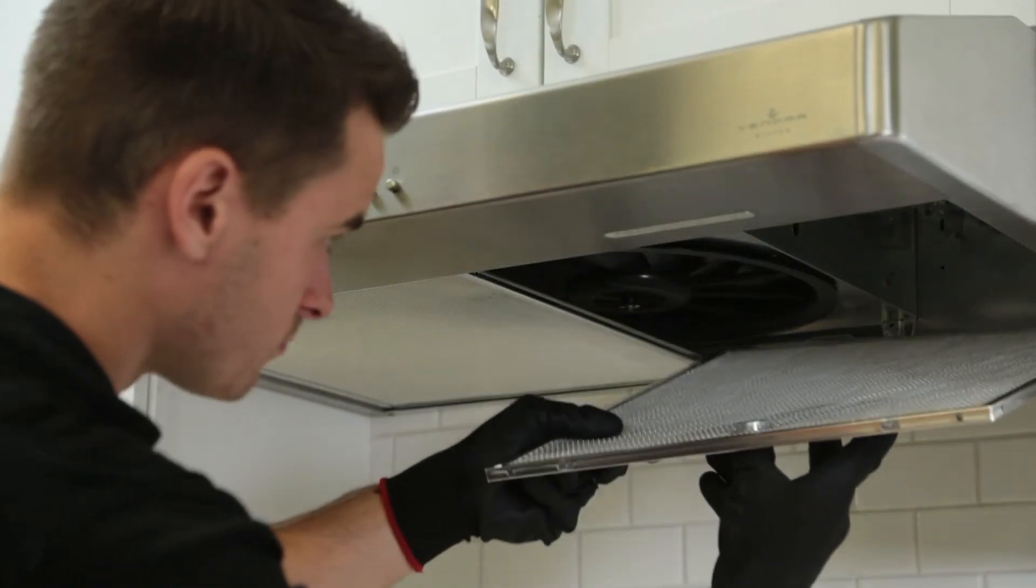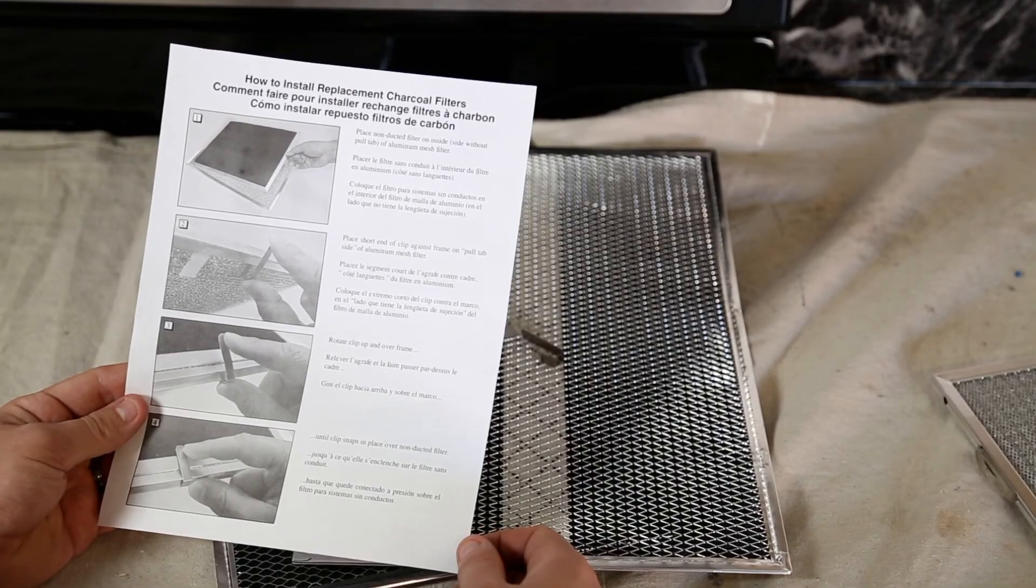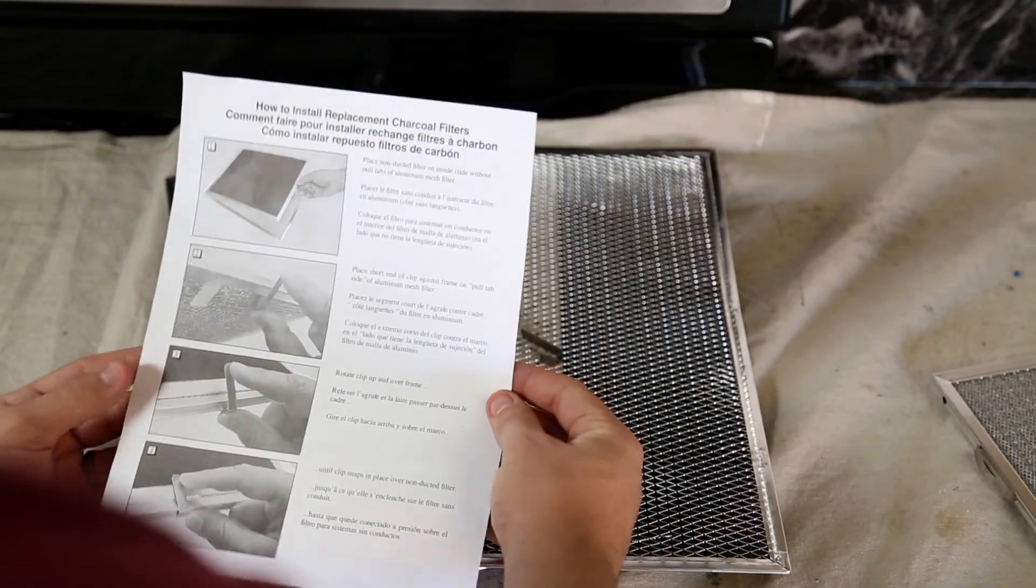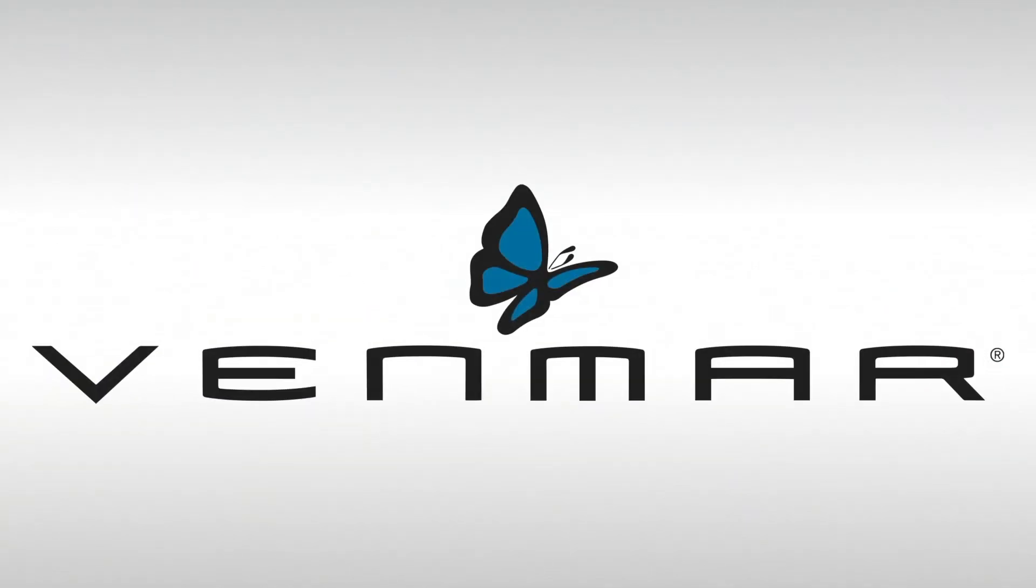Replace the grease filters. For ductless installation, you'll need to purchase non-ducted filters from a local retailer and install according to their instructions. Your Venmar Bistro Range Hood is ready for use.